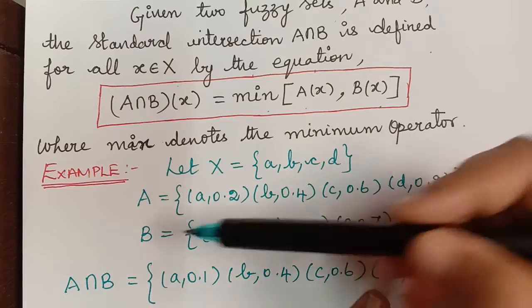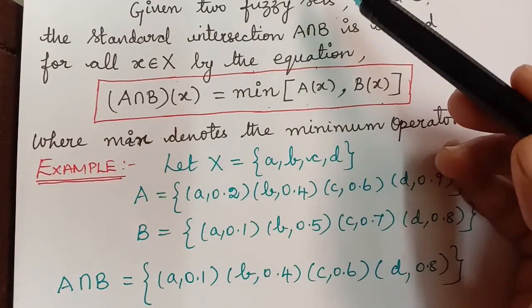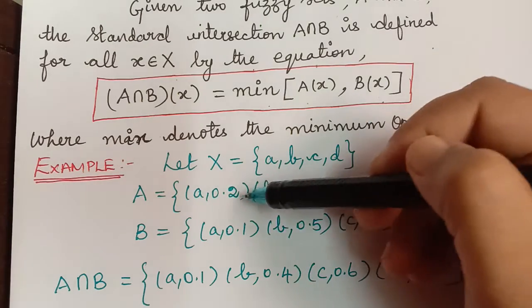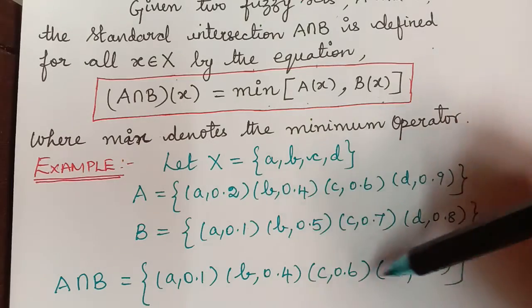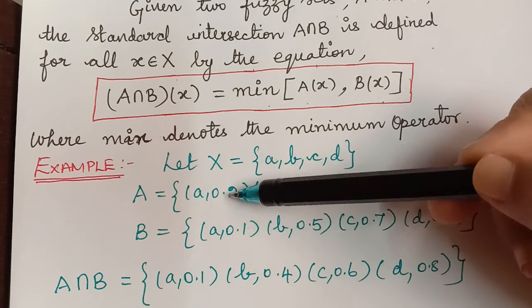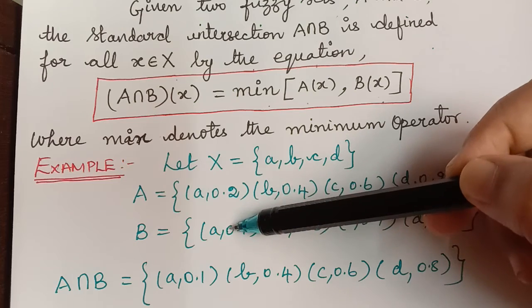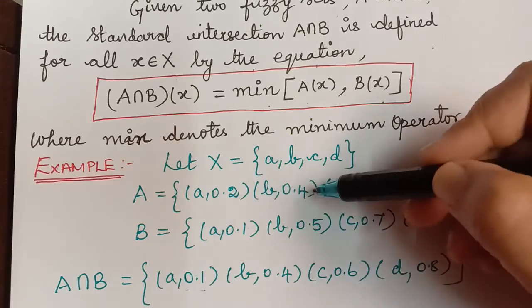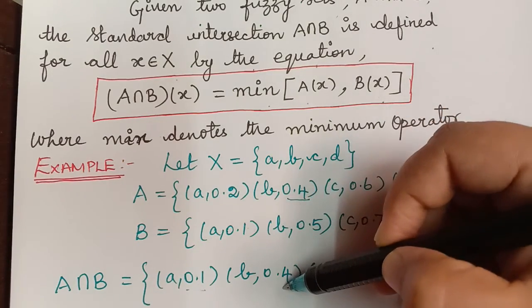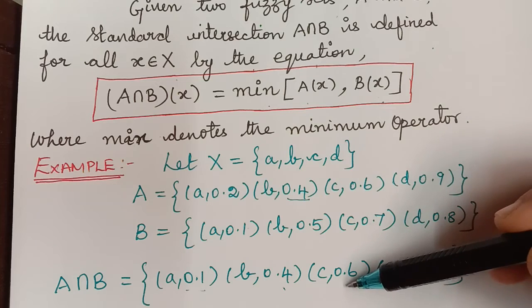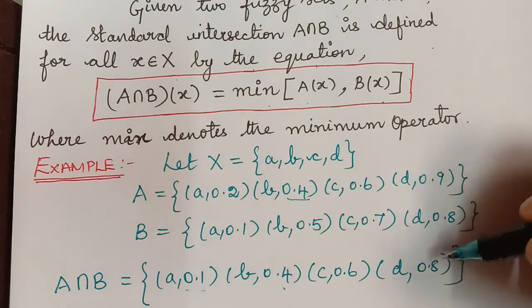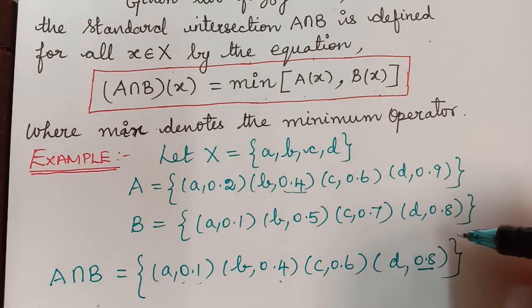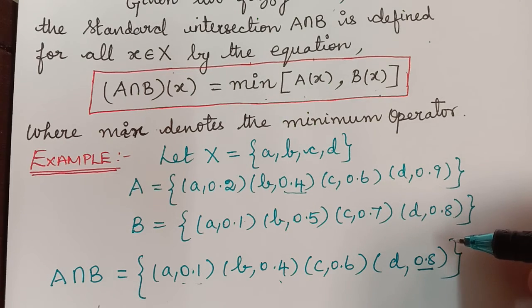Using the same universal set and membership grades for fuzzy sets A and B, for each element we take the minimum membership grade. For a: min(0.2, 0.1) = 0.1; for b: 0.4; for c: 0.6; and for d: 0.8. Therefore A∩B = {a/0.1, b/0.4, c/0.6, d/0.8}.